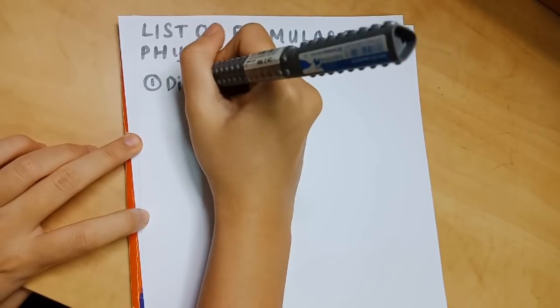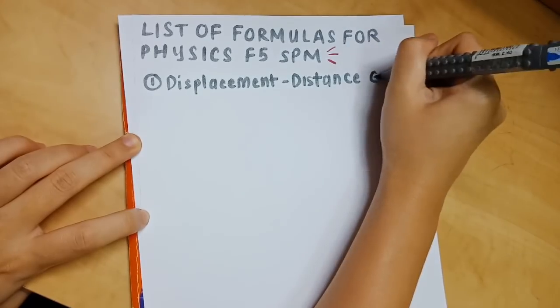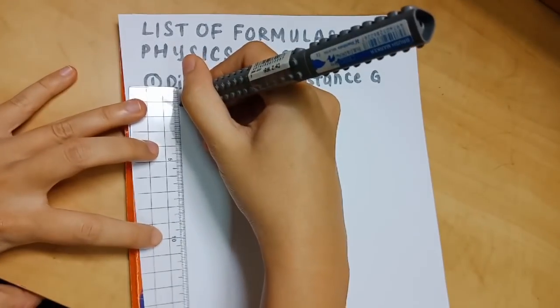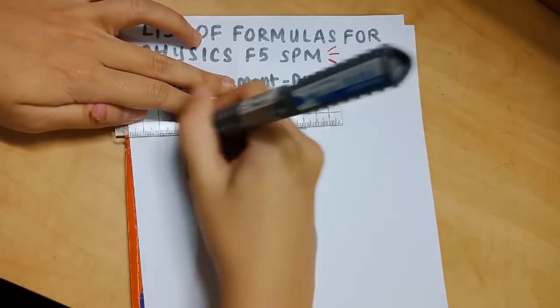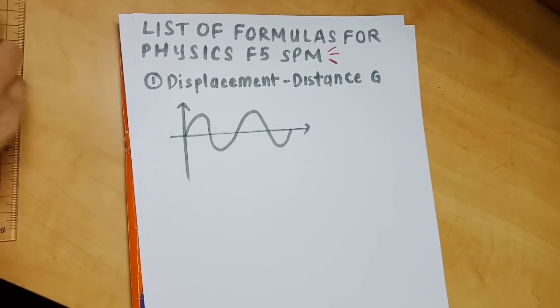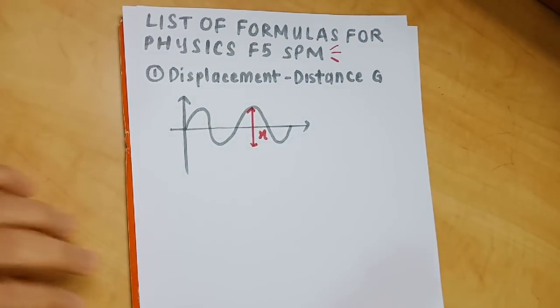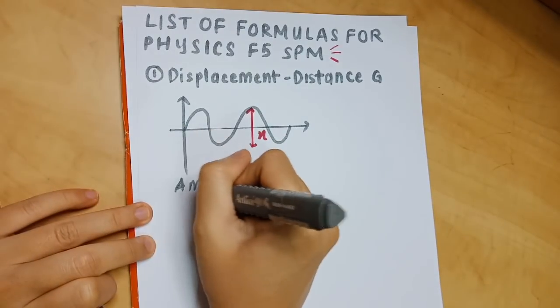The first one involves the displacement-distance graph. I'm drawing a graph to give you a better idea. The first formula is that amplitude equals x over 2. You'll see what I mean by x - so x is the distance from one peak to the bottom of the peak, and the formula is amplitude equals x over 2.